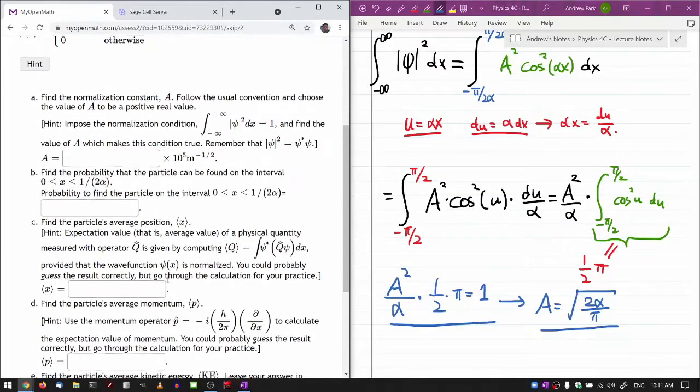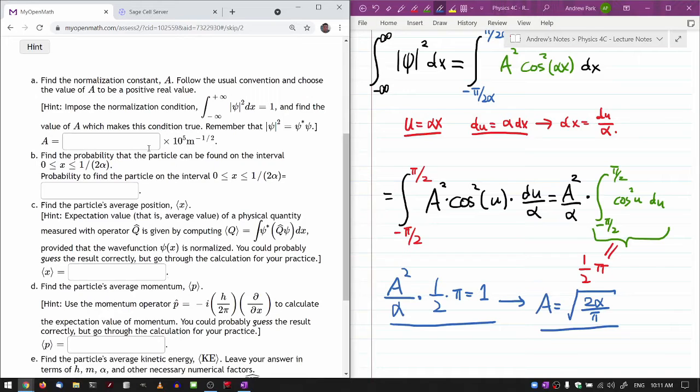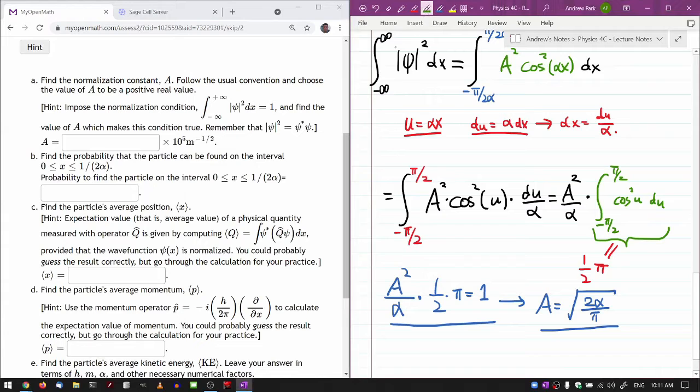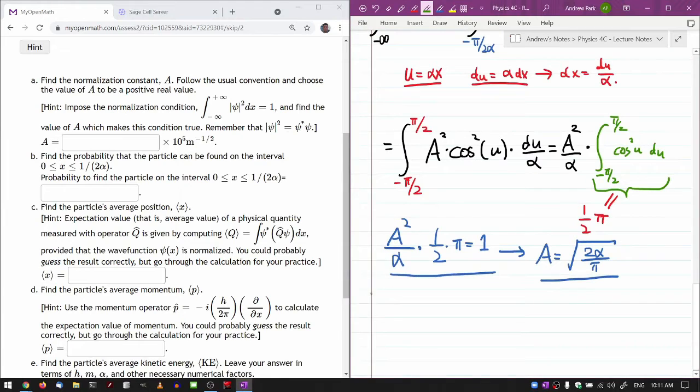And it asks now for the probability that the particle can be found on the interval from, yeah, this is a small portion of the interval. It's not quite one half. So this here, so this was part A. So for part B, the calculation kind of goes the same way it did for problem one. So for B, it's the exact same calculation you did in part A, except instead of your integral going over all space, it's explicitly going from zero to one half alpha.